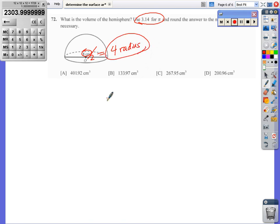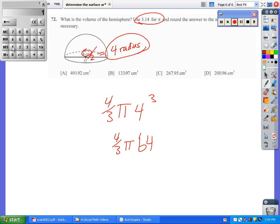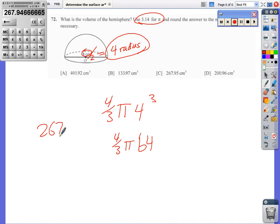4/3 pi. Let me stick that radius in there. Cubed, 4 cubed, 4 times 4 is 16, 16 times 4, 64, so I got 4/3 pi 64. Let me do that on there. 4 divided by 3, that familiar 1.3333, times 64, 85, times 3.14, 267.95, 267.95 centimeters cubed.